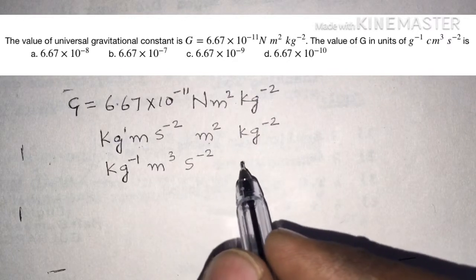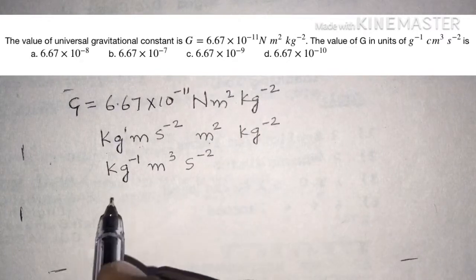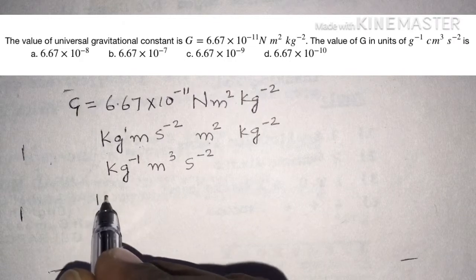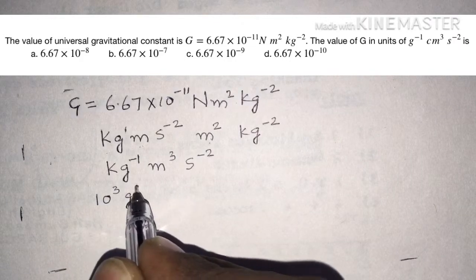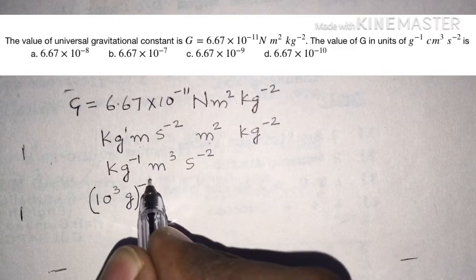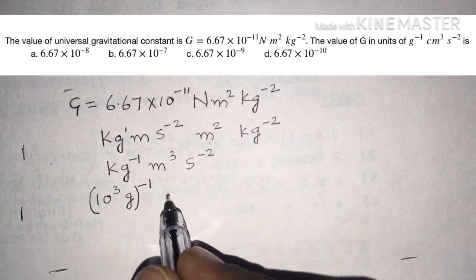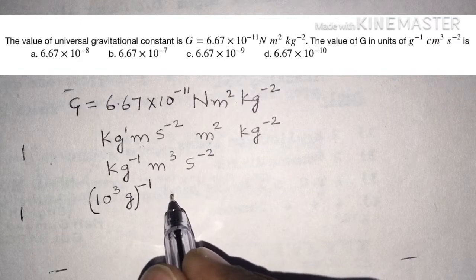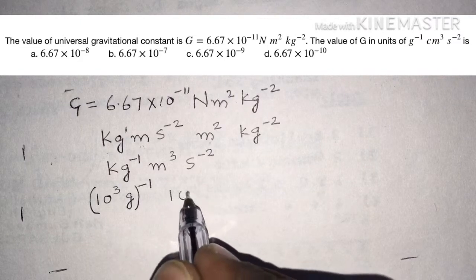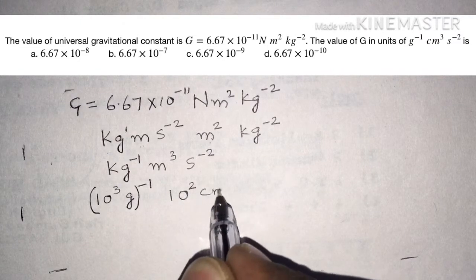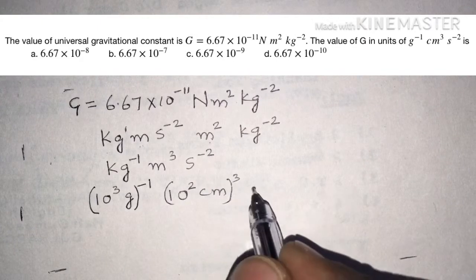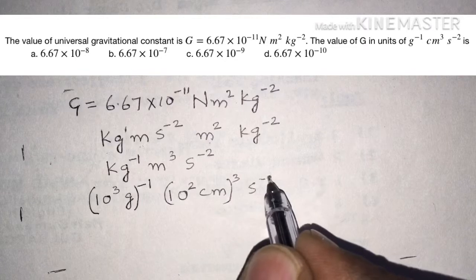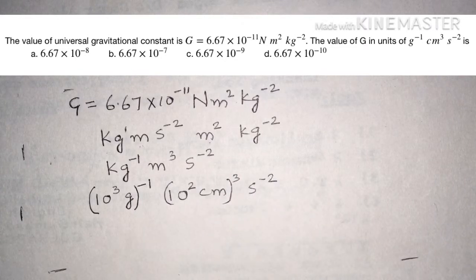Kilogram can be converted as 10 power 3 grams, and since it is per kilogram, it becomes 10 power minus 3 to the power of minus 1. Similarly, meter converts to centimeters as 10 power 2 centimeters, raised to the power of 3. Seconds is a common unit for all systems, so it is kept as it is.